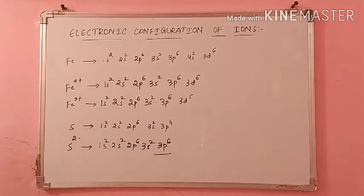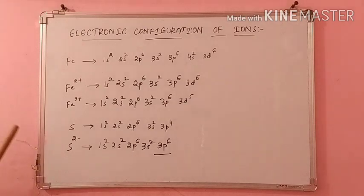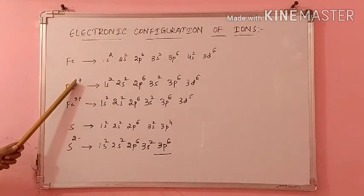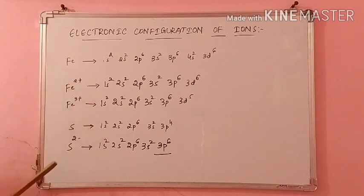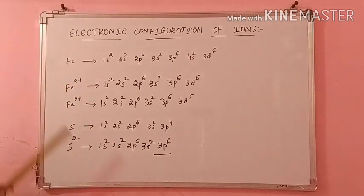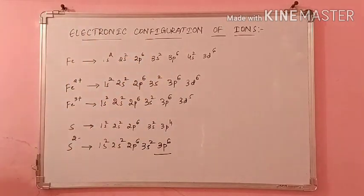Like this we are doing for the electronic configuration of ions. The only rule you have to remember is: if it is positive, then you have to subtract the electrons; if it is negative, then you have to add the electrons. Using this rule, we can find the electronic configuration of ions. I hope you understood the electronic configuration of ions.